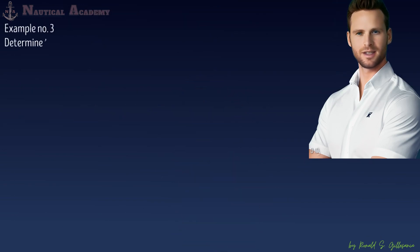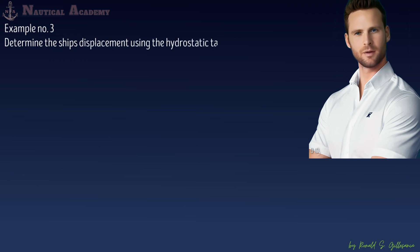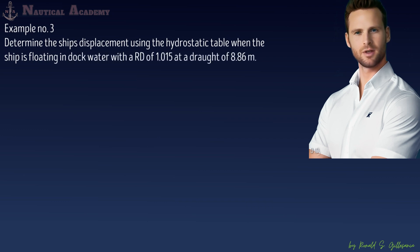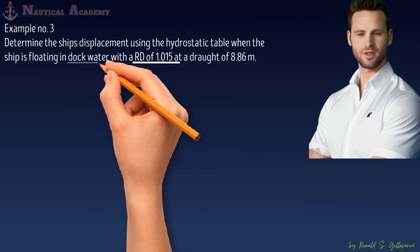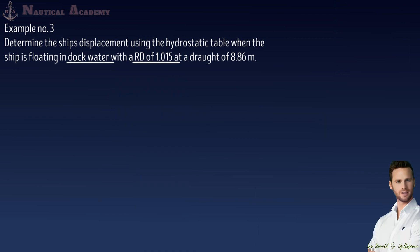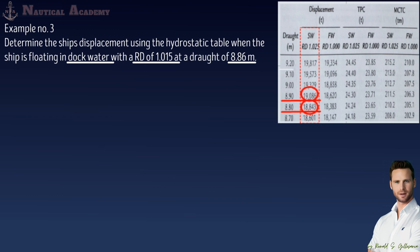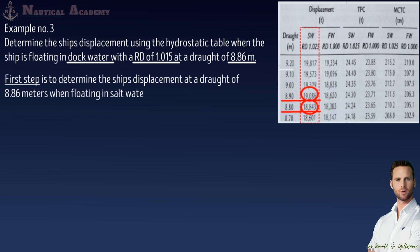This is our third example. Determine the ship's displacement using a hydrostatic table when the ship is floating in dock water with a relative density of 1.015, at a draft of 8.86 meters. The difference from the second example is only the water density — the ship is now floating in dock water instead of salt water, with the same draft of 8.86 meters. Our first step is to determine the displacement at 8.86 m in salt water, then apply corrections for dock water.